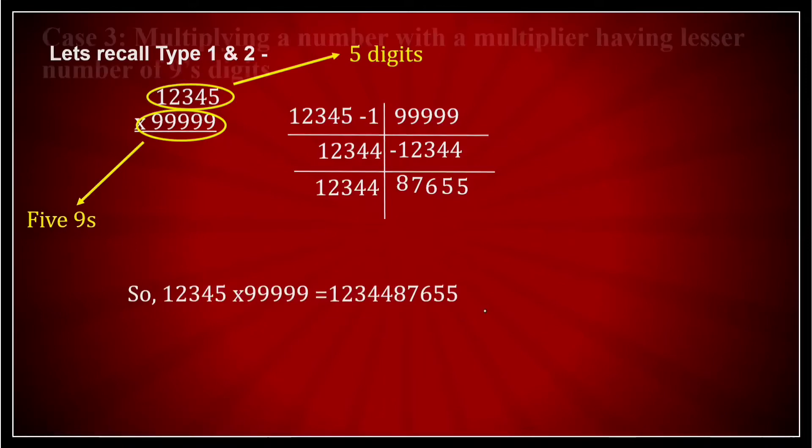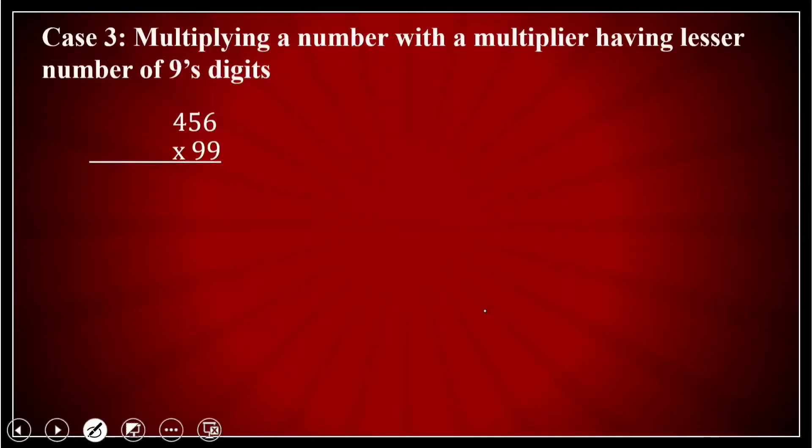Now let us come to type 3. Type 3 is what? When I am multiplying a number with a multiplier having less than number of nines. This number is having how many digits? It is having three digits.